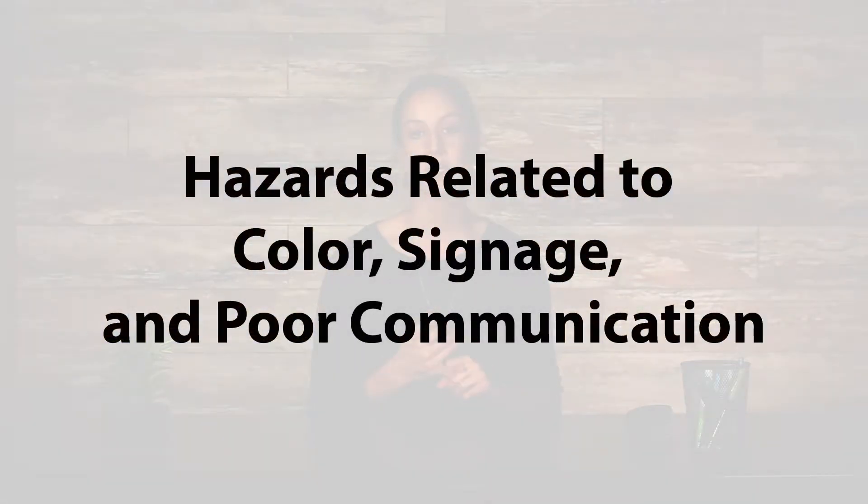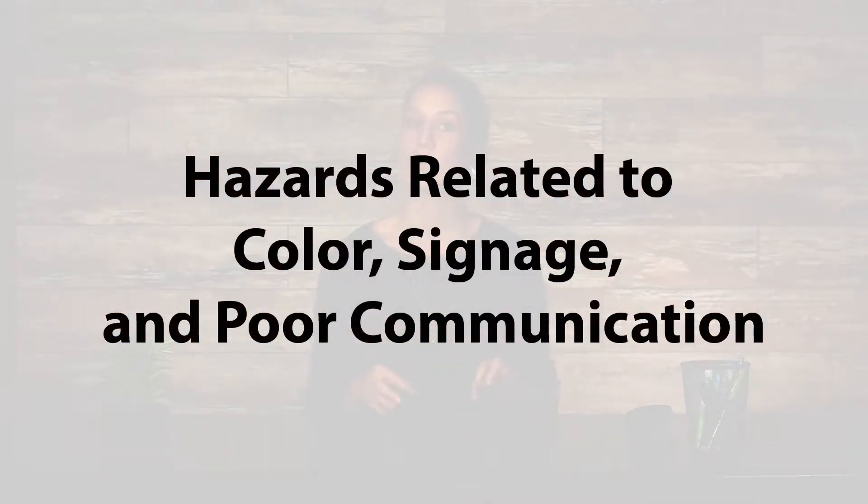Hazards related to color, signage, and poor communication. Color is used for marking hazards and related information through color coding. However, hazards related to color can occur because of color blindness. In addition, everyone must understand and remember what different colors stand for. The American National Standards Institute, Department of Transportation, and Occupational Safety and Health Administration all have standards designating what colors symbolize. Following these standards helps workers remember what colors mean.